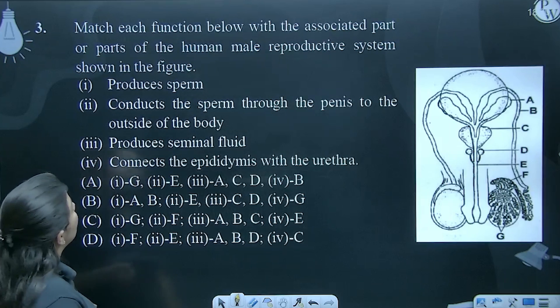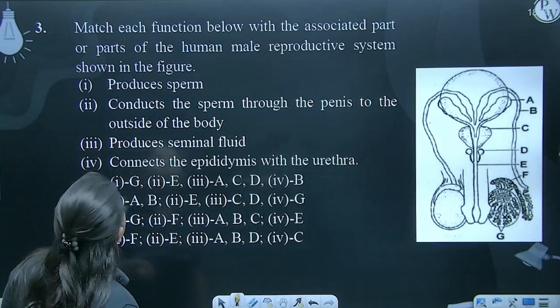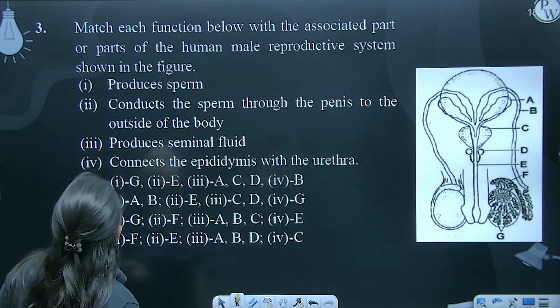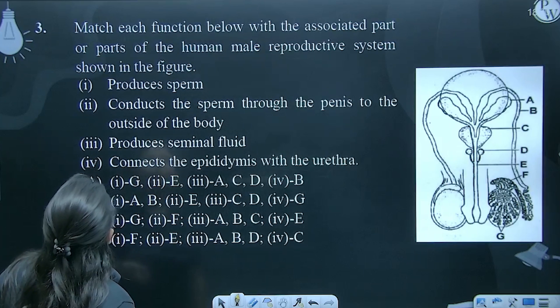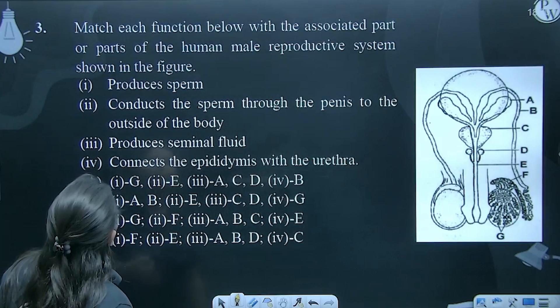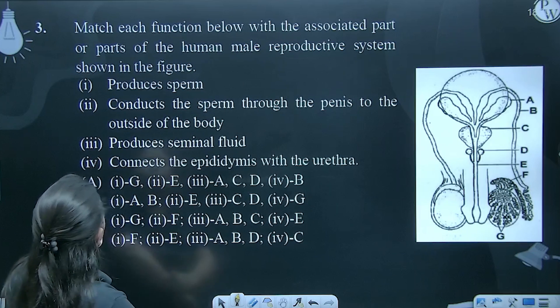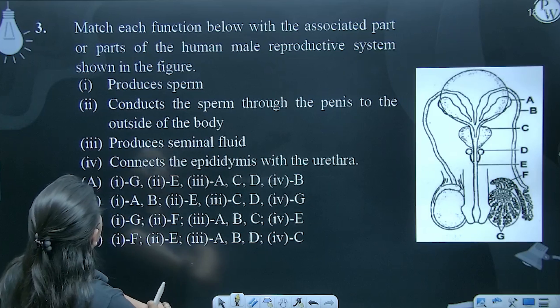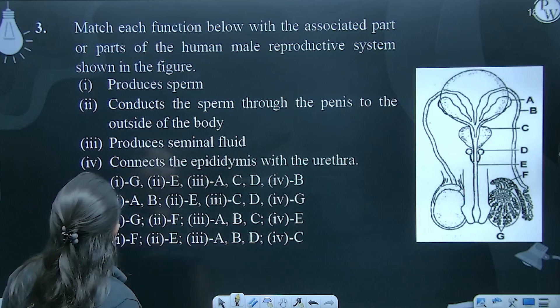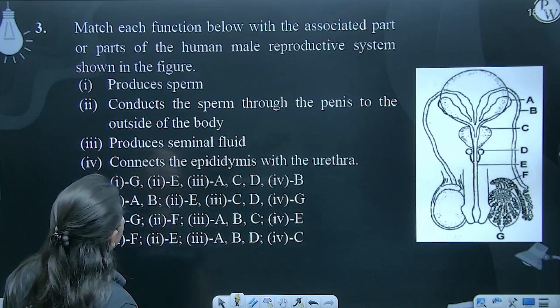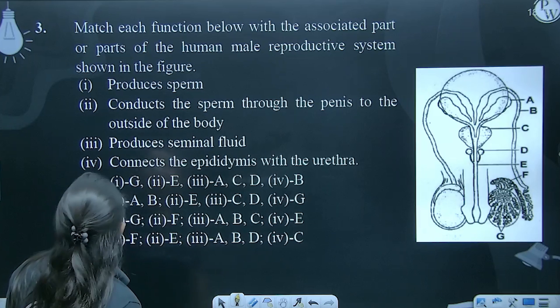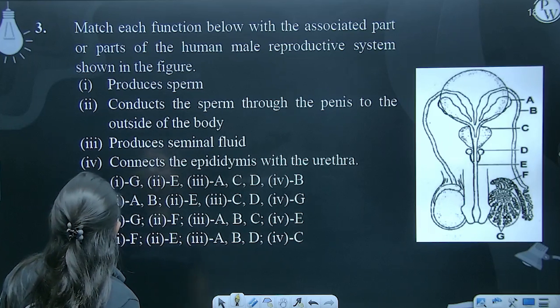Match each function below with the associated part of the human male reproductive system shown in the figure. The functions are: produce sperm, and conduct the sperm through the penis to the outside of the body.